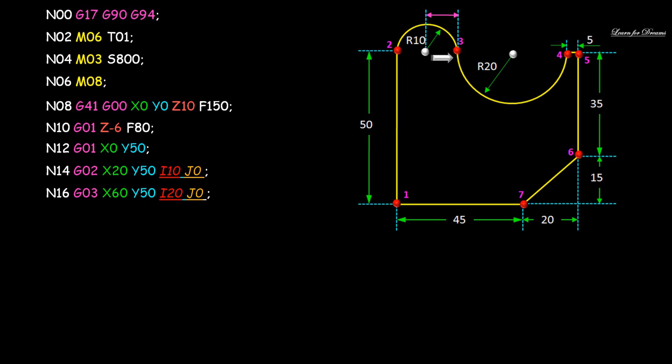Now let's see when I and J values are positive or negative. When the next point is on the right side of the center point, the distance is taken as positive — just as we always do, the left side of the X-axis is negative and the right side is positive. Now for the second circle: you are at point 3 moving towards point 4. Point 4 is 20 mm in the positive X direction from the center, with no change in Y coordinate. So I value is 20 and J value is 0.